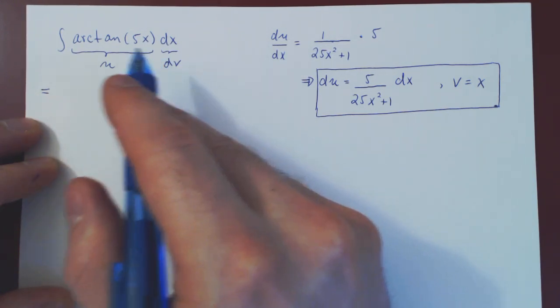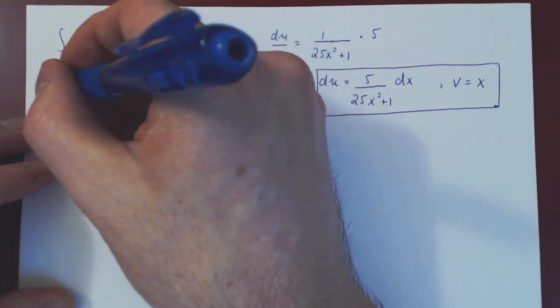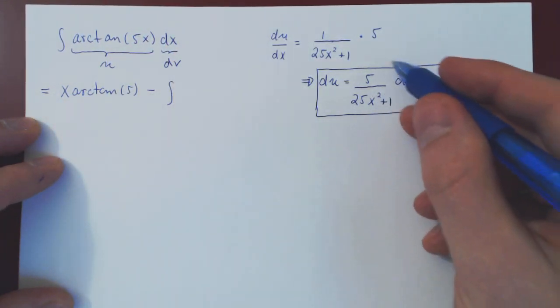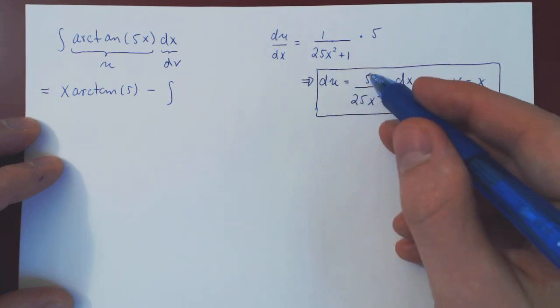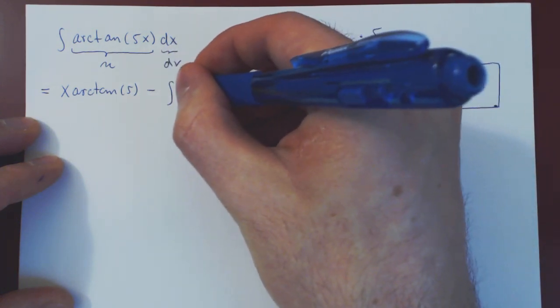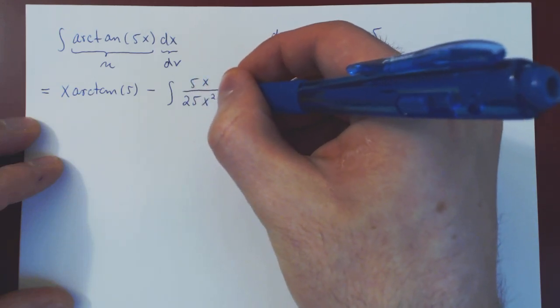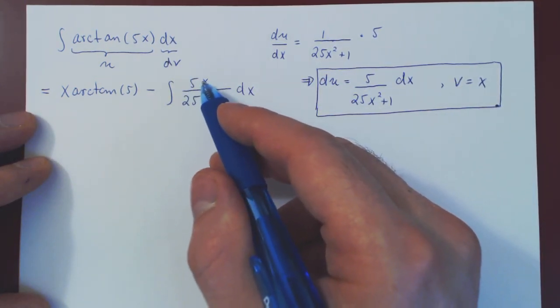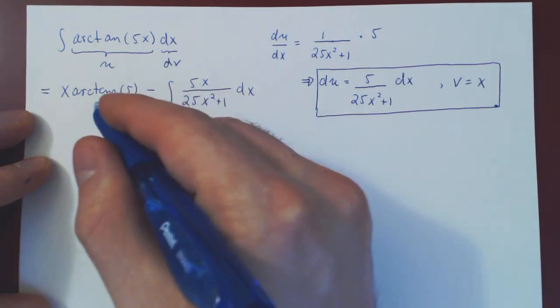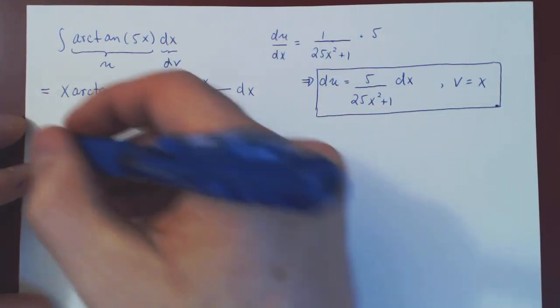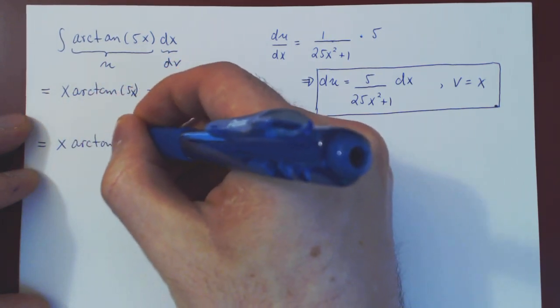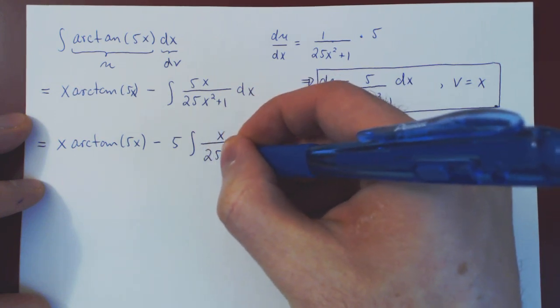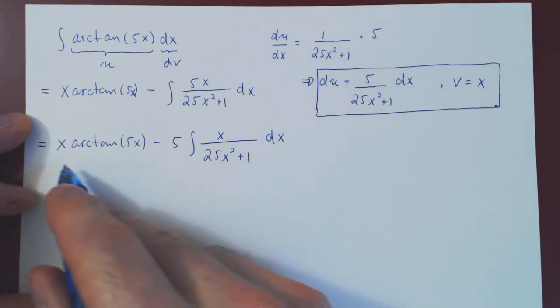So the integral of udv is uv. I'll write the v first. So x arctangent of 5x minus the integral of v, x times du. So if you multiply v times this, you'll get 5x over 25x squared plus 1. Now, if you want, 5 is a multiple of the numerator. You can factor it outside. And sorry, this is arctangent, of course, of 5x. This is our u. So we have x arctangent of 5x minus 5 times the integral of x over 25x squared plus 1 dx. This completes integration by parts.